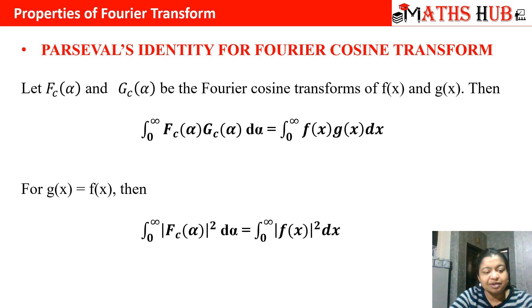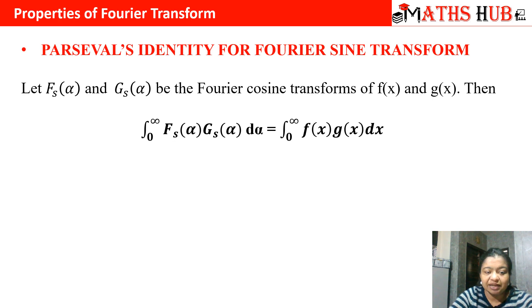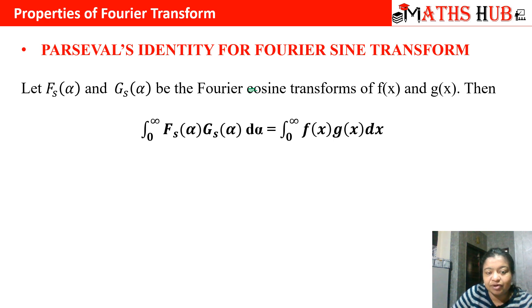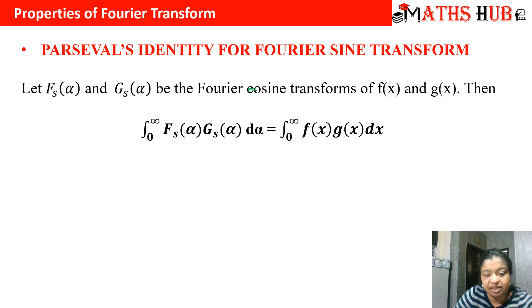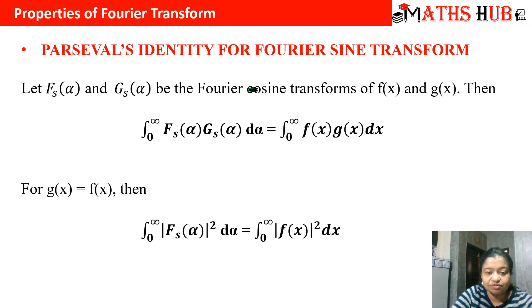We have a similar result for Fourier sine transform. In Fourier sine transform, if there are two functions f(x) and g(x) with Fourier sine transforms f_s(α) and g_s(α), then the integral from 0 to infinity of f_s(α) times g_s(α) dα equals the integral from 0 to infinity of f(x) g(x) dx. Similarly, when the two functions are the same, the left-hand side reduces to |f_s(α)|² and the right-hand side reduces to |f(x)|².